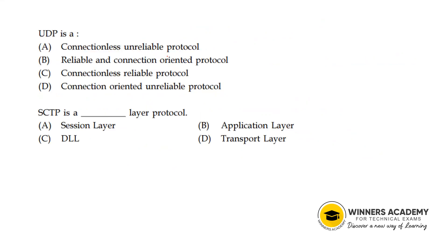UDP is a connectionless, unreliable protocol. The sender and receiver do not establish a connection before sending the message. UDP does not provide reliable delivery.